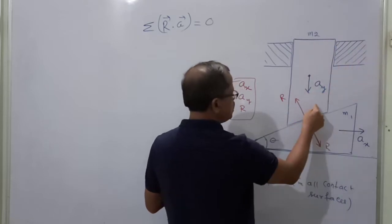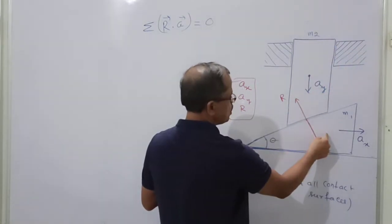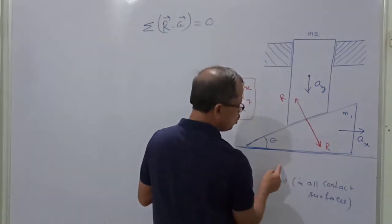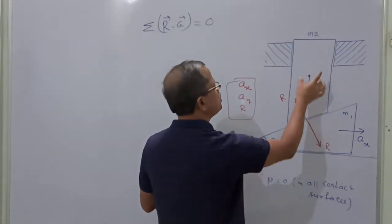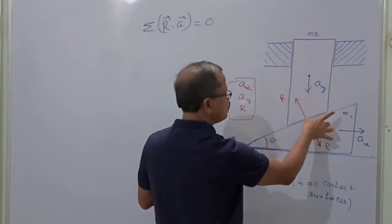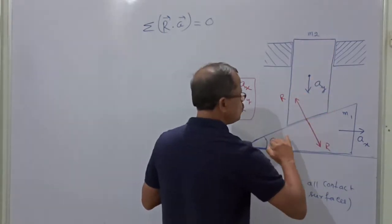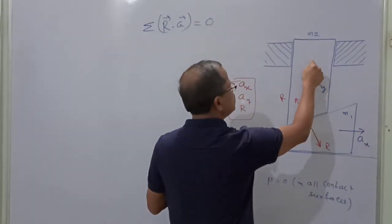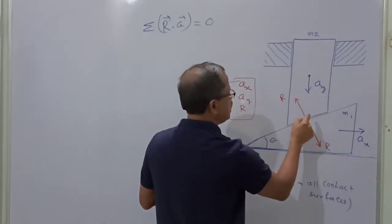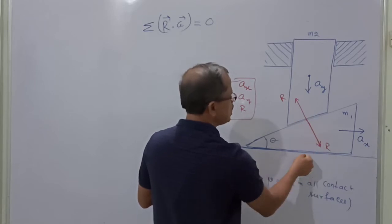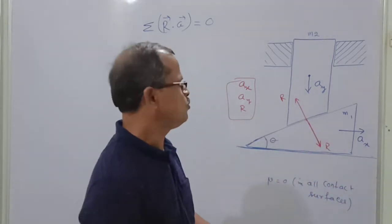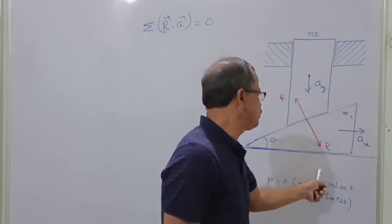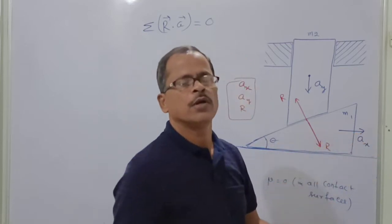Between the two bodies there is no friction — only normal reaction. Between the wedge and the ground, there is also no friction. This body is restricted to move only downward, and this body is restricted to move only to the right. Since there is no friction from the ground, the ground reaction upward has no role here. That's why I am not showing it while solving the problem.